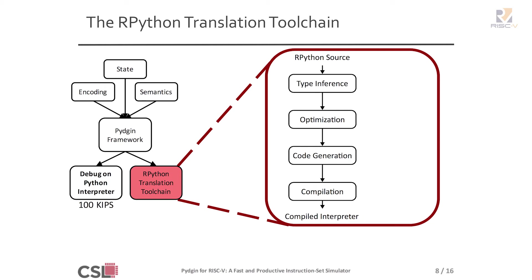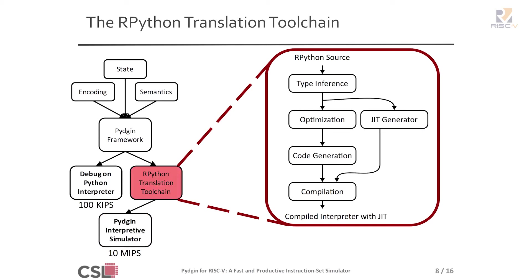Here's the flow: at the top you have the RPython source — Pigeon would be this. The tool does type inference, then compiler optimizations, generates C code, and compiles it with GCC or LLVM depending on your platform. Now we have a native binary. Because it's a native binary without JIT enabled, this is an interpretive simulator — much faster than running on Python — and we typically get 10 MIPS. The killer feature of the RPython Translation Toolchain is the JIT generator, which couples a just-in-time compiler to the translated interpreter.